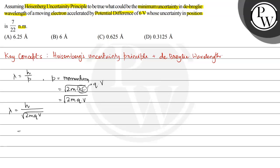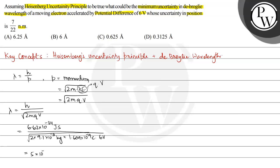Substituting the values: h = 6.62×10⁻³⁴ J·s, mass of electron m = 9.1×10⁻³¹ kg, charge Q = 1.609×10⁻¹⁹ C, and potential difference V = 6 volts. After simplifying this expression, λ comes out to be 5×10⁻¹⁰ meters, which is equal to 5 Ångström.